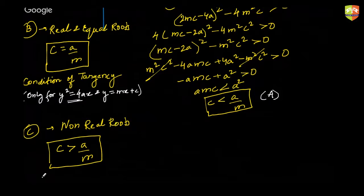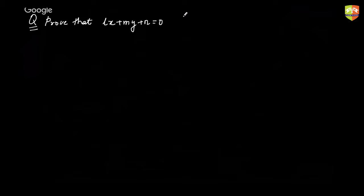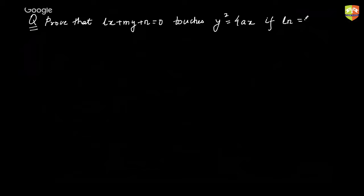Let's take a quick question on condition of tangency. The question is: prove that Lx + My + n = 0 touches the parabola y² = 4ax if ln = am².